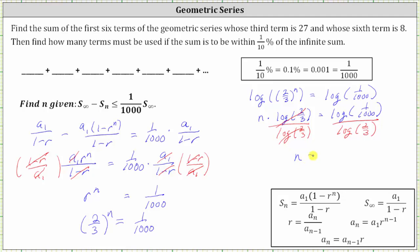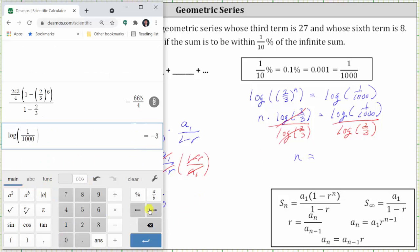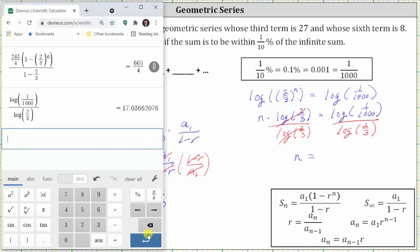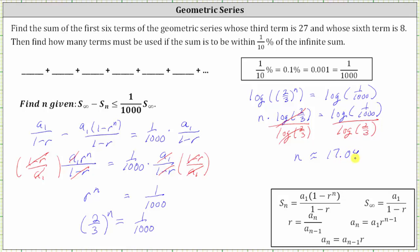Simplifying with a calculator, we get approximately 17.04. But we can't use a decimal value for n — n is a number of terms. We can't round down to 17, because then the error would be more than one-thousandth times the infinite sum. Therefore, we have to round up to 18. So it will take 18 or more terms in order for the partial sum to be within one-tenth of a percent of the infinite sum.